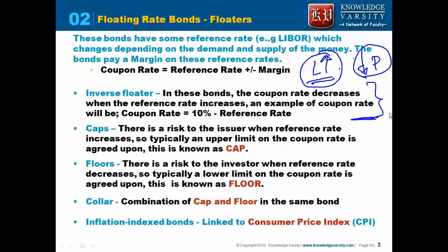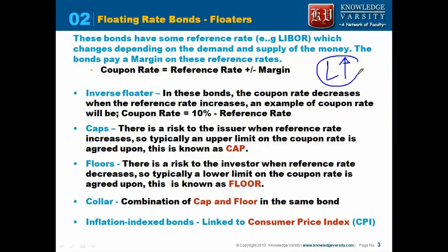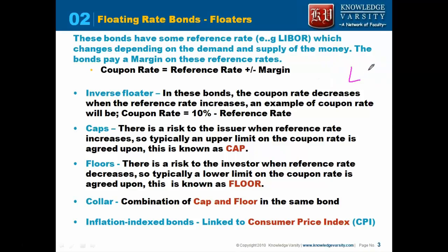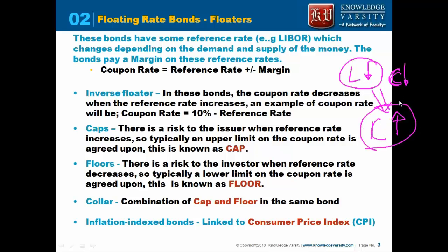But consider the other direction too: what if you are expecting the market rate to go down? If you invest in a direct floater and the LIBOR rate goes down, the coupon rate will decrease. But in an inverse floater, when the reference rate decreases, the coupon rate increases. So if your view is that the market interest rate will be going down, you should not be buying the floater, but instead you should be buying the inverse floater.